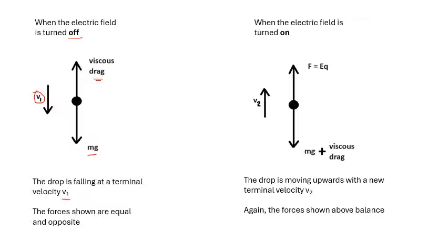Now we turn on the electric field. Very quickly it reaches another terminal velocity v2 going upwards, and it's being pulled upwards by the electric force F equals Eq, where E the field strength is V over d. We can measure V, we know the distance between the plates, we know the field strength, and q is the charge on the drop. That is equal and opposite to mg plus the viscous drag again, the air resistance. Now the drop is moving upwards with a new velocity v2, and again the forces here balance.